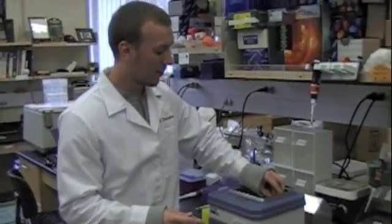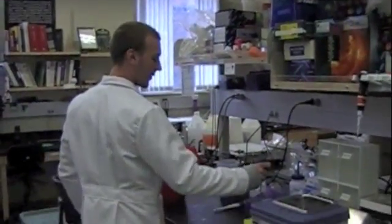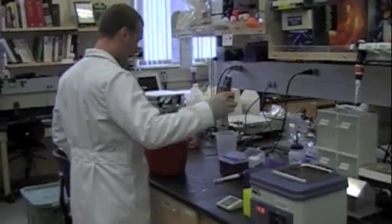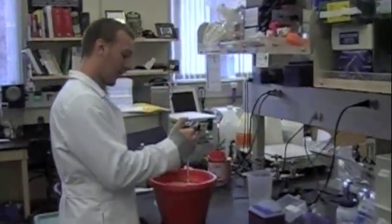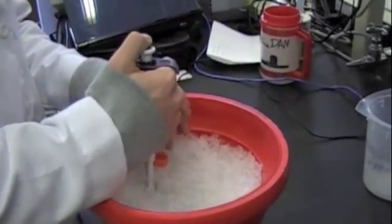So now with all these components prepared, we can start our transformation. The first step in transformation is to pipette your competent cells from the ice into your 50 ml falcon tube. Simply pipette your cells into the falcon tube.